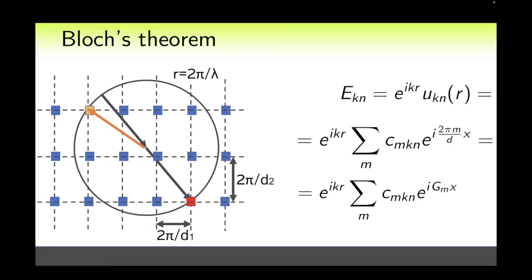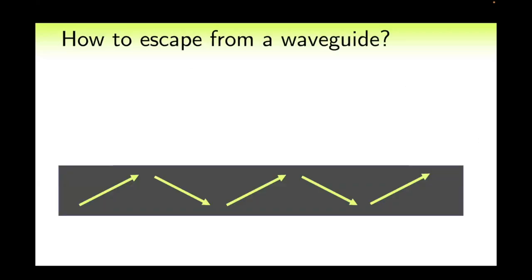After all, the Ewald sphere just tells us that the dispersion law is satisfied. Therefore, in a medium there exist waves with all possible k vectors which differ by a reciprocal lattice vector, but only those waves which satisfy the dispersion law can propagate to infinity as plane waves. And those are the ones that intersect with the Ewald sphere. We can use this property of periodic structures, for example, to escape from a waveguide.